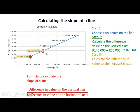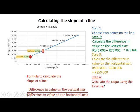Now the difference in value on the horizontal axis when we move from point C to point D: at C, company profits is 250,000, and at D, company profits is 500,000. So the difference is 500,000 minus 250,000, which gives us 250,000. Calculating the slope: 70,000 divided by 250,000 gives us 0.28. So the slope of the line between C and D is 0.28.